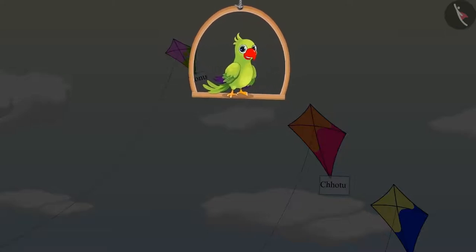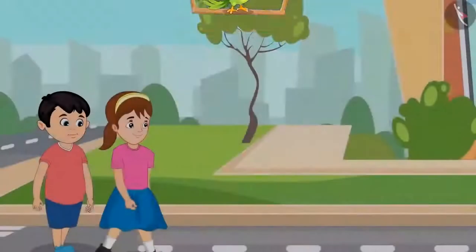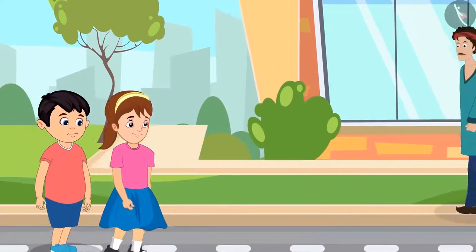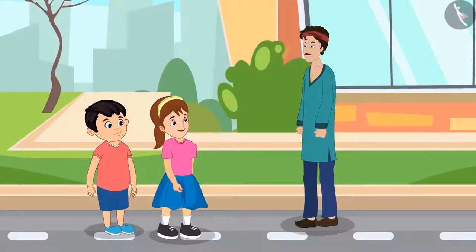Let's see what happened after that. Chotu and Aarti were going home together after flying their kites. While going home they saw an uncle on the way. Chotu, look how tall that uncle is!